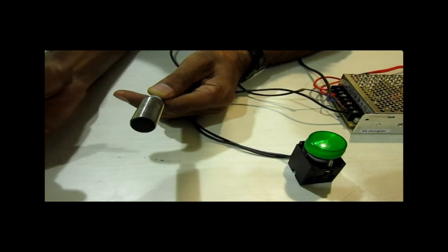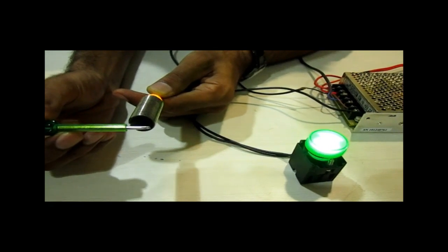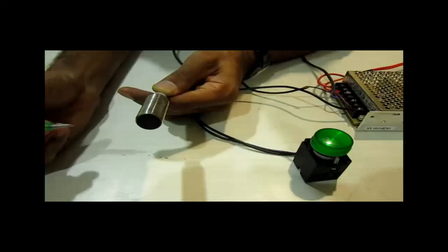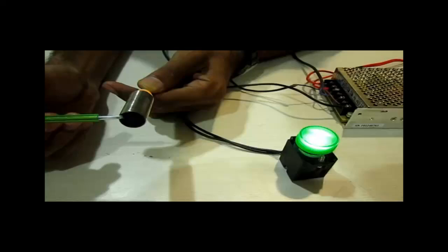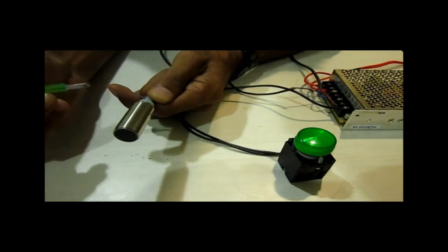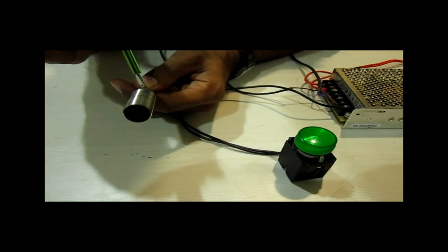Using this principle we can detect metallic objects, and in many applications we can detect whether a metallic object is present in the sensing area or not. This sensing range can be increased or decreased by the screw at the back side of the sensor.